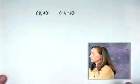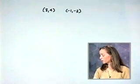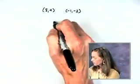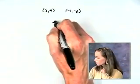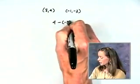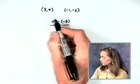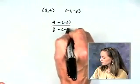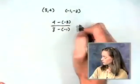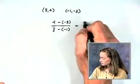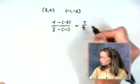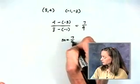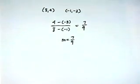Let's see how you did. Here are the two ordered pairs. Let's subtract the y values in the order 4 minus negative 3, and put that over the difference in the x's: 8 minus negative 1. Simplifying, we get 7 over 9. The slope of the line is 7 ninths.